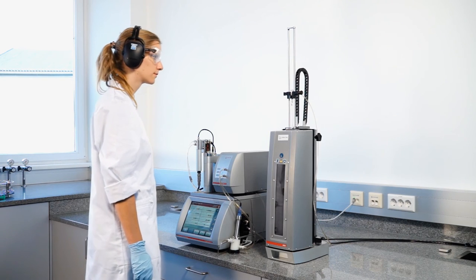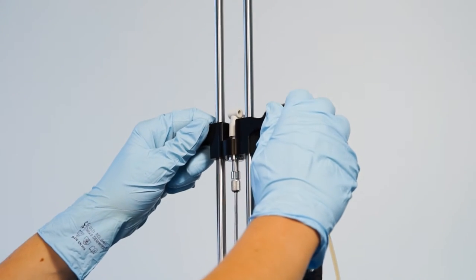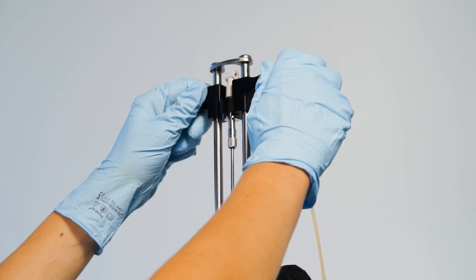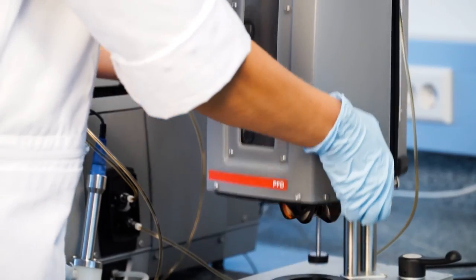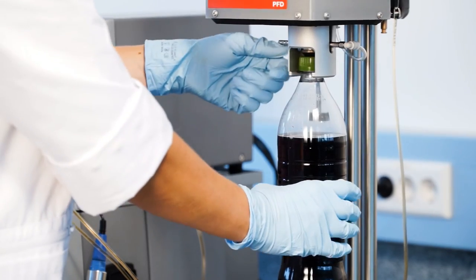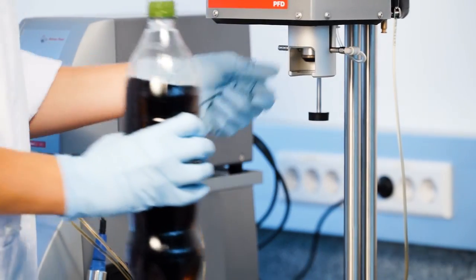To remove the container after your measurement is done, raise the filling tube, release the pressure, and open the safety shield.